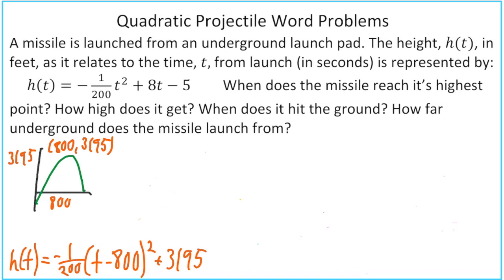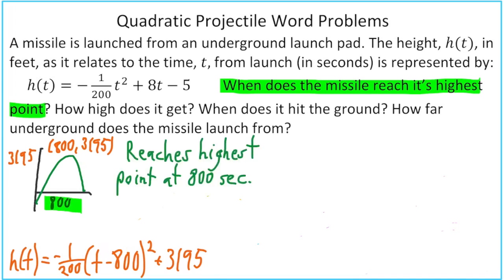Now we're ready to look at the questions. When does the missile reach its highest point? That would be the t value of our vertex, 800. So we can write, it reaches its highest point at 800 seconds. Next question, how high does it get? That's going to be our h of t value at the vertex of 3,195. So we can write, highest point equals 3,195 feet.